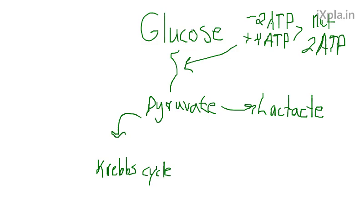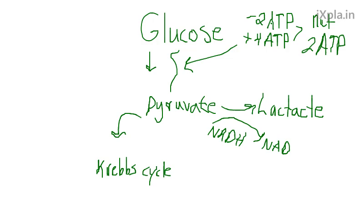The reason we go from pyruvate to lactic acid is really to regenerate NAD. Pyruvate takes the NADH and converts it back into NAD, which is important because to keep the glycolysis cycle going we need NAD. One step in glycolysis uses NAD and turns it into NADH — you get two NADHs total. Lactic acid forms as a side effect, and as it builds up it increases acidity in the muscles. Muscles don't like acidity, so we stop exercising.